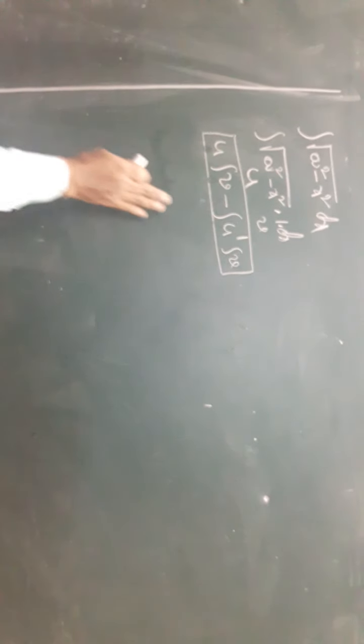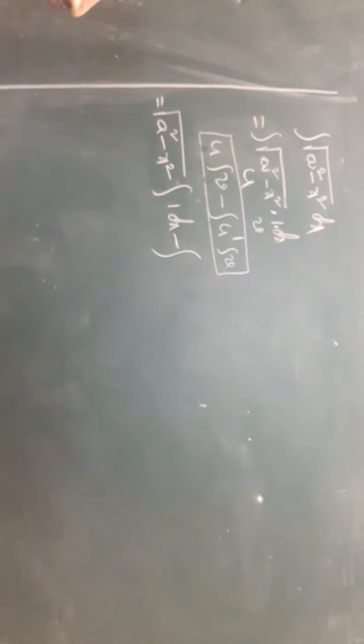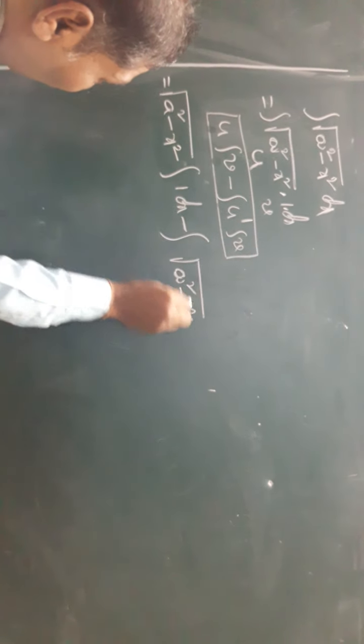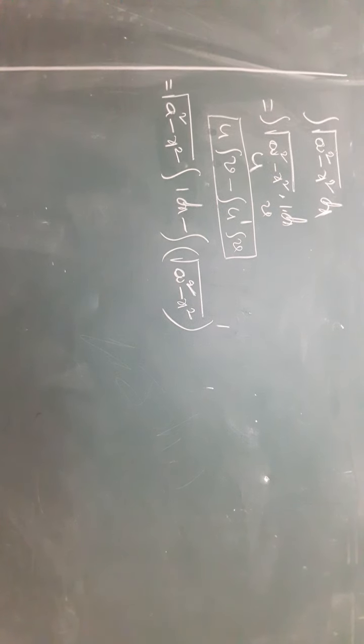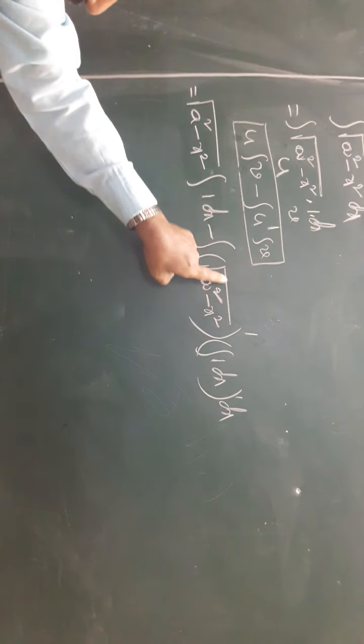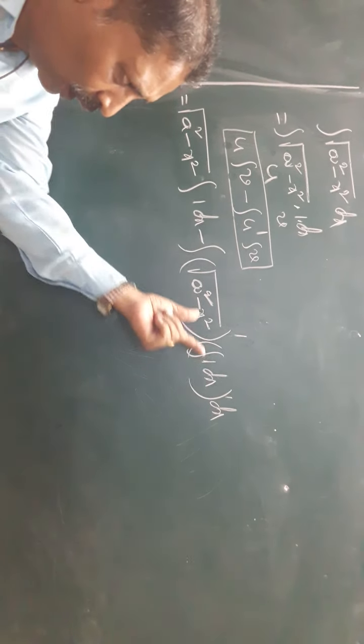Substituting the values: √(a² - x²) · ∫1 dx minus ∫u' of (a² - x²) · ∫1 dx whole dx. The integral of 1 is x.